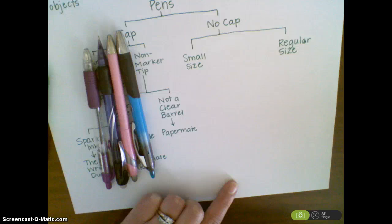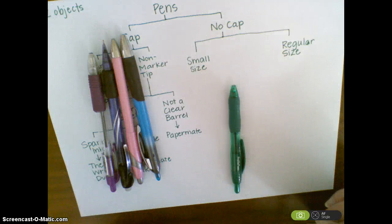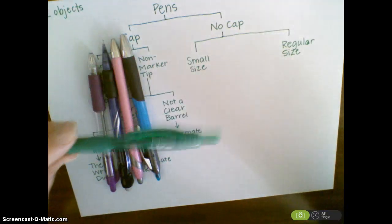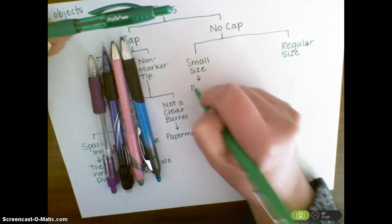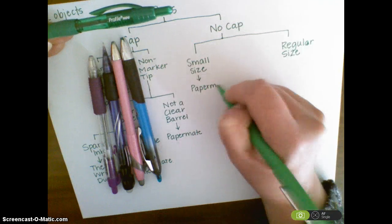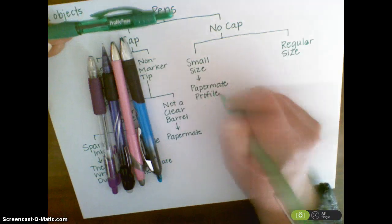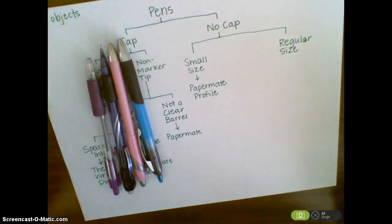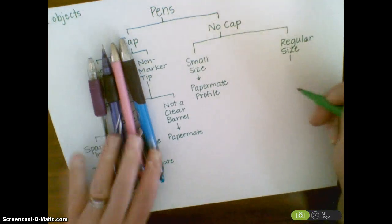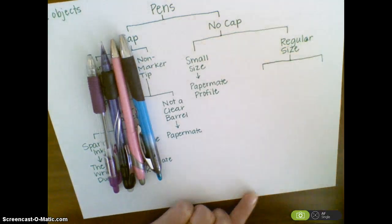For my small size pen, there was only one — it's called Paper Mate Profile. Since I've named that one, I'm going to set it aside into my done pile. Now I'm going to go to all my regular size pens and decide how I can sort them into two categories.